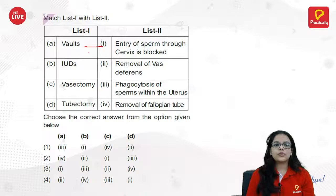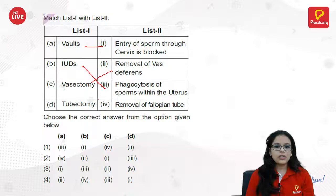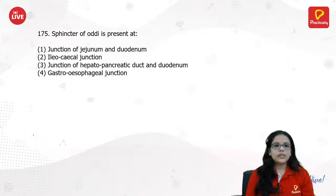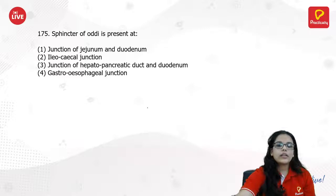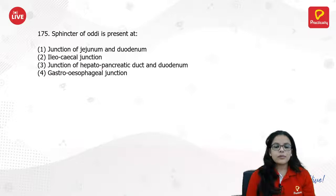Entry of sperm through the cervix is blocked by IUDs. Vasectomy is done on males where the vas deferens is removed. Tubectomy is done in females for the fallopian tube. Sphincter of Oddi is present between the pancreatic duct and duodenum.